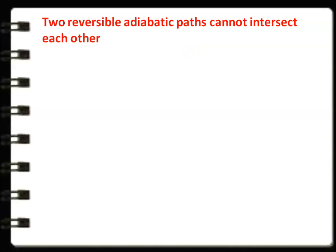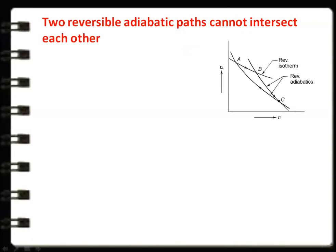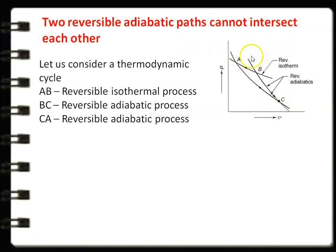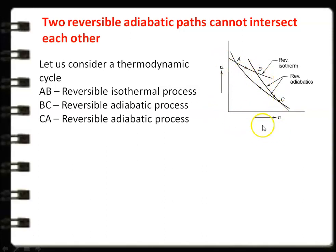The first topic: two reversible adiabatic paths cannot intersect. We consider a thermodynamic cycle with three processes — A-B, B-C, and C-A. A-B is a reversible isothermal process, B-C is a reversible adiabatic process, and C-A is also a reversible adiabatic process. These three processes constitute a thermodynamic cycle, plotted in the PV coordinate. The area under the PV diagram is the net work done during the cycle, enclosed by the area of the curve.